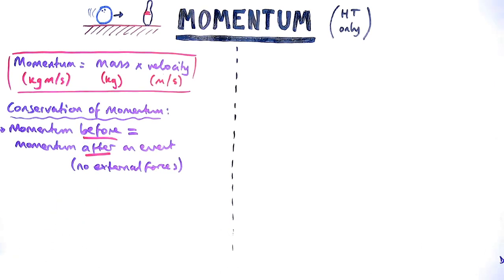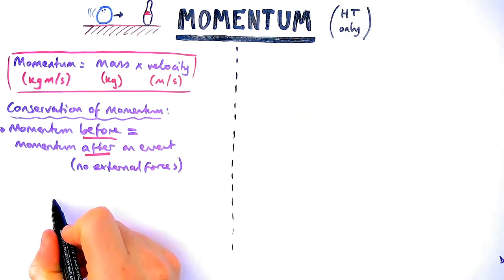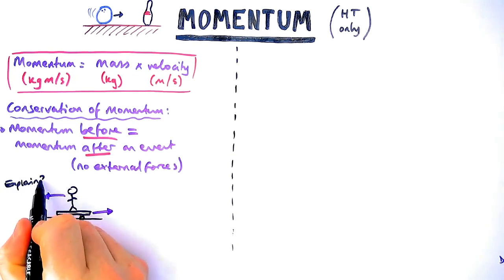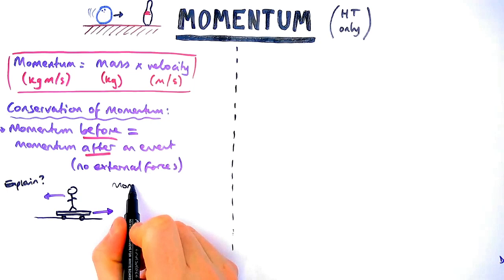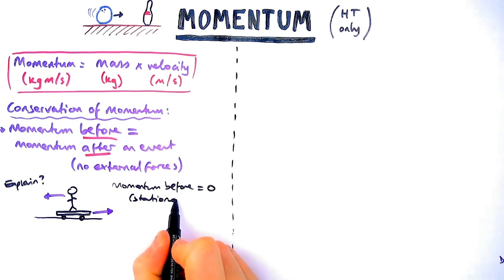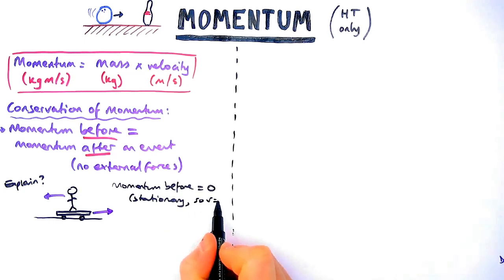You could be asked to use this to explain a couple of different situations. The first one is if you have an object which is initially stationary and then has two things moving in opposite directions. For example, a skateboarder falls over, the skateboard goes to the right, the person goes to the left. Initially the person is stationary so there is no velocity, so the momentum before the collision is zero.